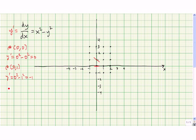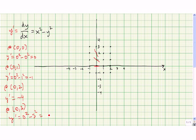Now let's go to the point (0,2). Y prime is 0 squared minus 2 squared, so that's negative 4. We're just going to approximate. At the point (0,3), the x coordinate is 0, so we get 0 squared minus 3 squared, and that's negative 9. Pretty steep.